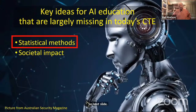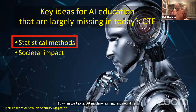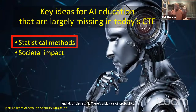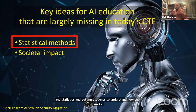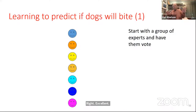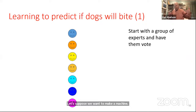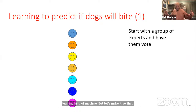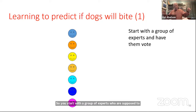The first missing element is statistical methods. When we talk about machine learning, neural nets, and all of this stuff, there's a big use of probability and statistics, and getting students to understand how that works is important. Let me give you my simplest possible explanation of machine learning. Suppose we want to make a machine that looks at a picture of a dog and predicts whether the dog will bite. You start with a group of experts who are supposed to determine whether a dog will bite, and have them vote.